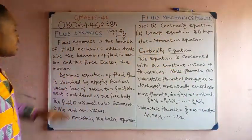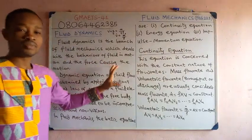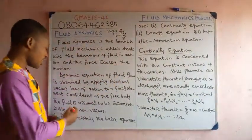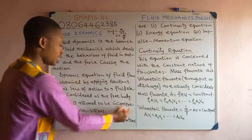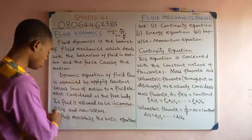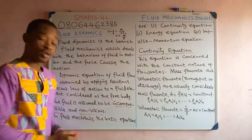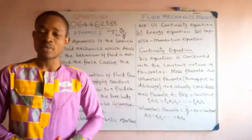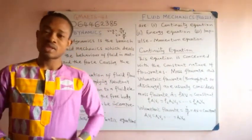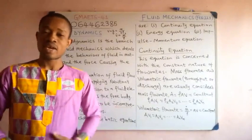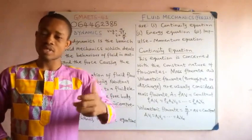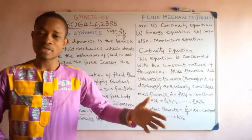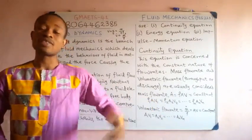In analysing a fluid under Fluid Dynamics, we make an assumption that the fluid has to be incompressible and non-viscous. When we say that a fluid is incompressible, it means that the fluid does not compress. In such a case, we assume the density to be constant, and that applies to liquid.